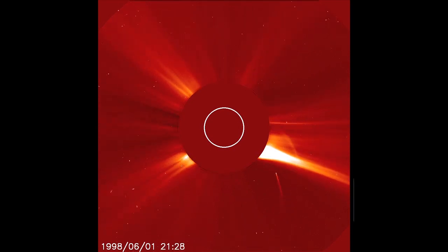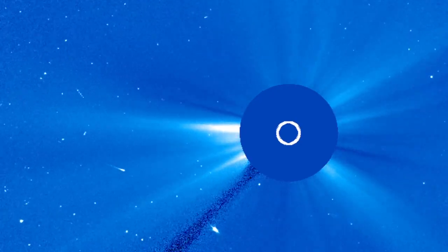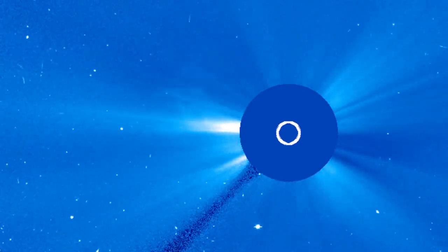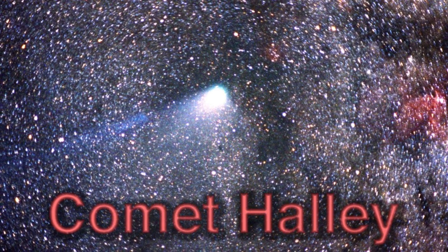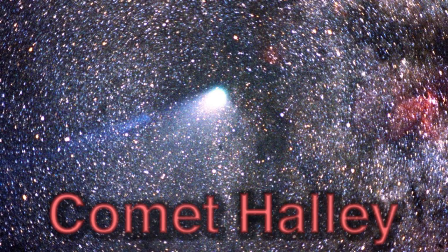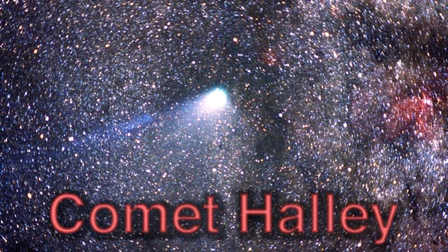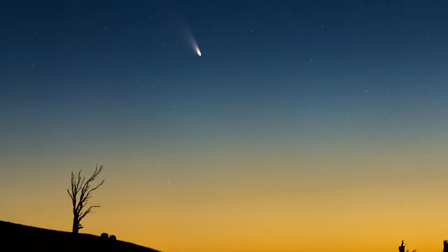Some comets come in so close to the sun they lose so much mass that they don't even survive the trip around the sun. Whereas others, like the famous Halley's Comet, can survive many trips around the sun because they don't lose nearly as much mass. From time to time, a comet is in just the right place in our solar system that humans can look up and see a bright object in the sky.